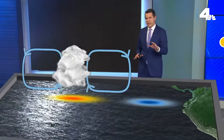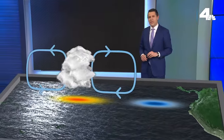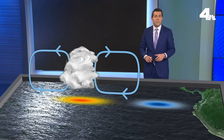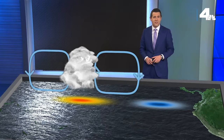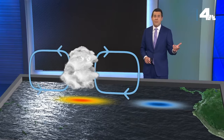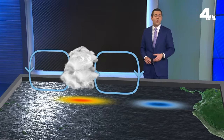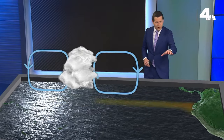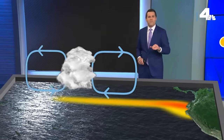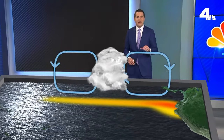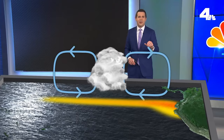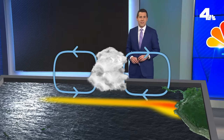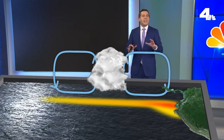But during El Niño, things are different. The trade winds are weaker, meaning that the warmer water isn't being pulled across the Pacific. On top of that, the weaker wind means that upwelling of cold water slows down. An area of warm water starts to form off the Pacific coast of South America. El Niño has started, and you can see that has changed how the atmosphere is circulating.